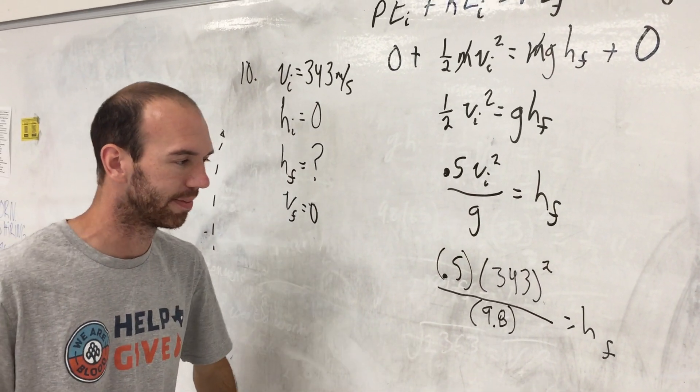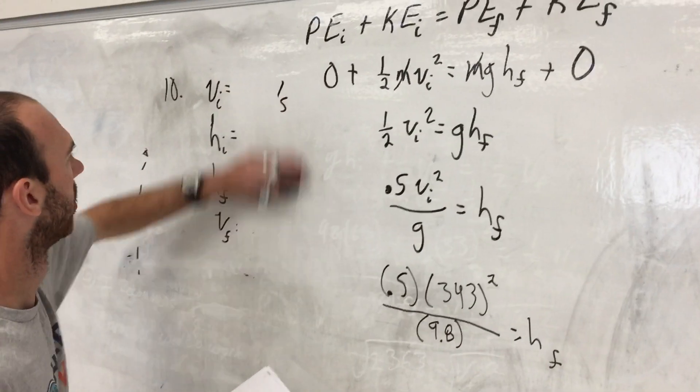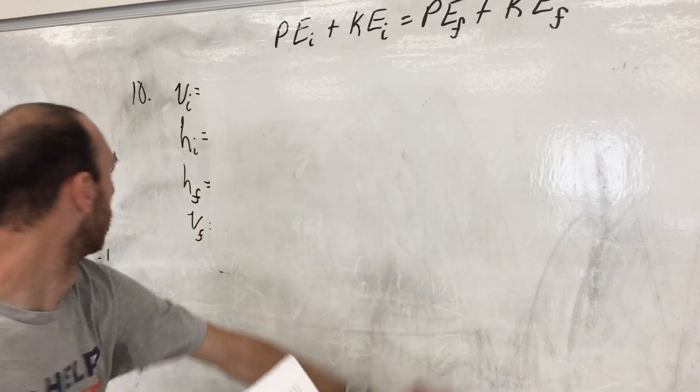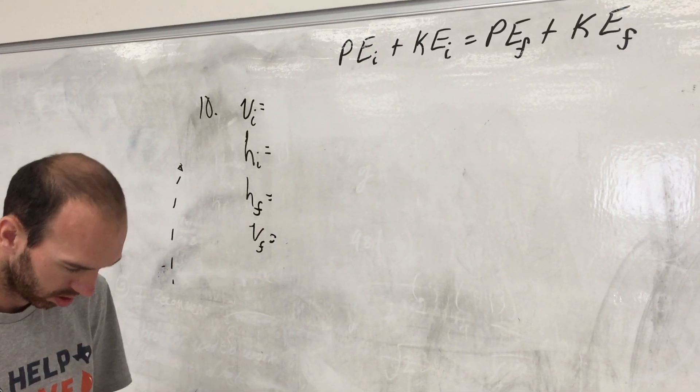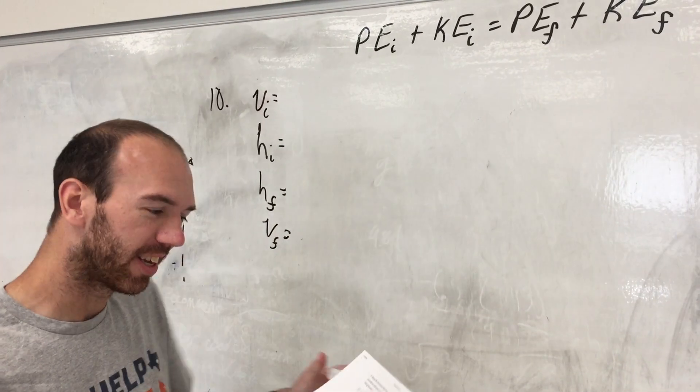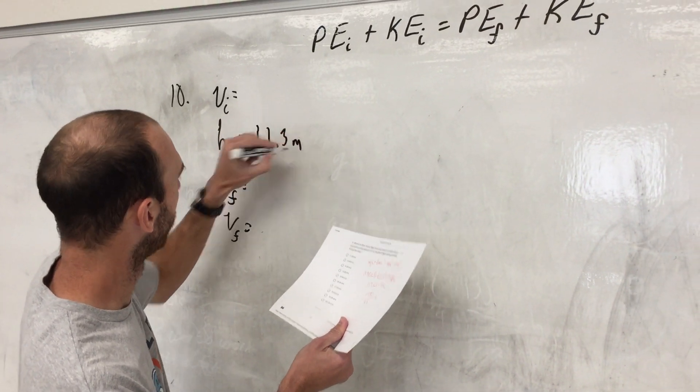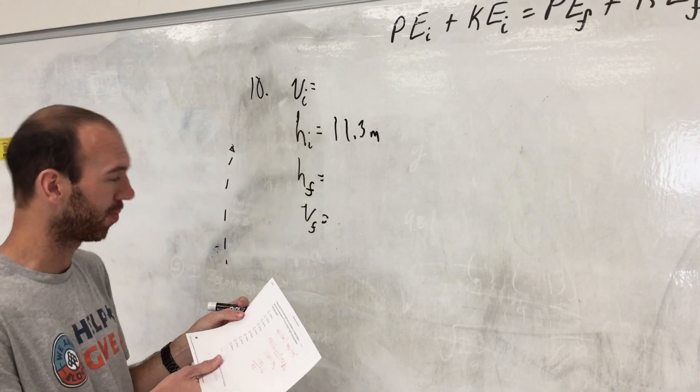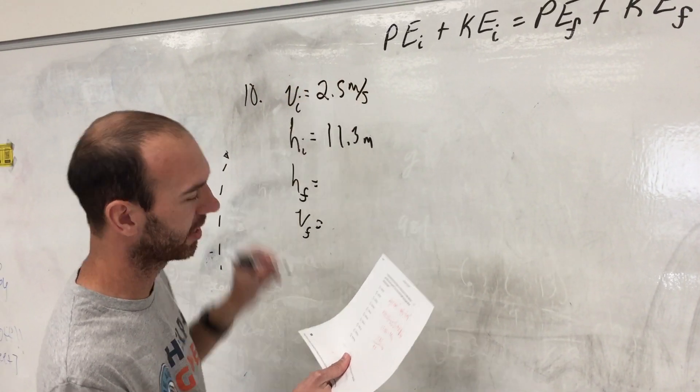Number eleven, we got Winnie the Pooh throws Piglet down from a tree branch, initial height of 11.3 meters. Notice like we're just using these over and over and over, so you just have them for every problem, basically going to be filling them in.